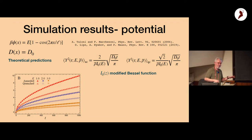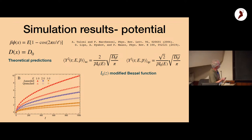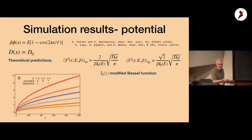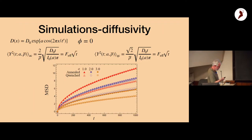For a periodically varying potential with constant diffusion constant, you just evaluate the Lifshitz-Jackson integral involving exp(−A cos x), which gives modified Bessel functions. You find results for both the quenched and annealed cases and the numerical simulations work absolutely perfectly. When the diffusion constant also varies, you again get modified Bessel functions and find perfect agreement.